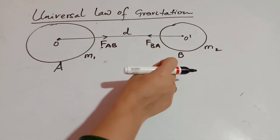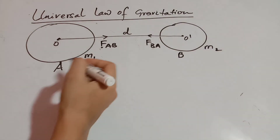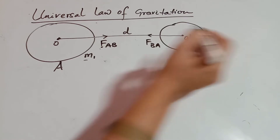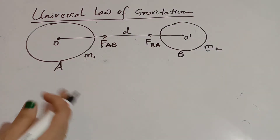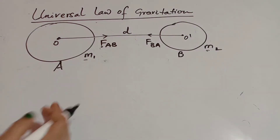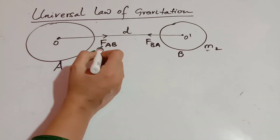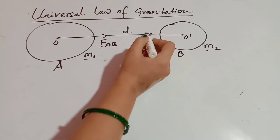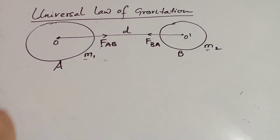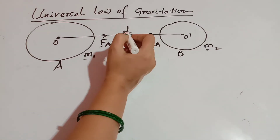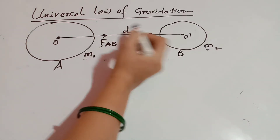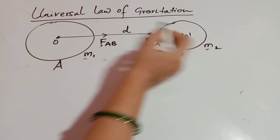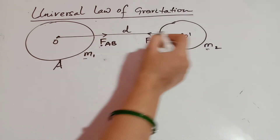As you can see in the picture, we have two objects A and B having different masses M1 and M2. A force is acting between them — F_AB and F_BA in opposite directions. D is the distance between the centers of the objects.